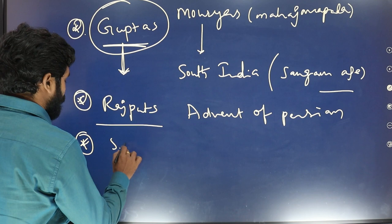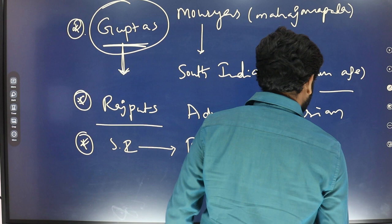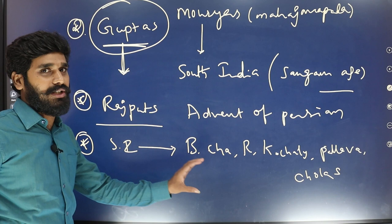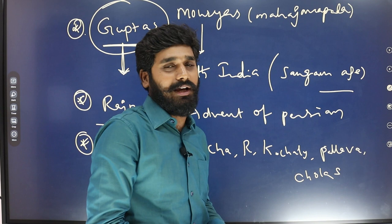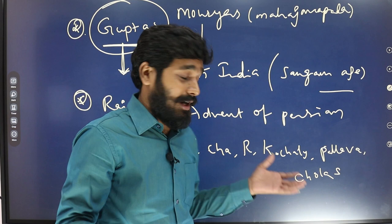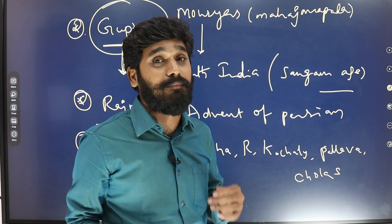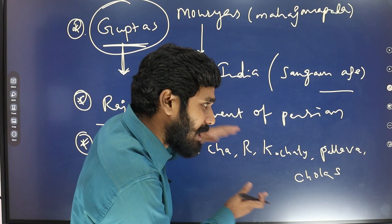After the Rajputs, we will discuss South Indian history — the Badami Chalukyas, Rashtrakutas, Kalyani Chalukyas, Pallavas, and Cholas. These are very important dynasties. Great architecture can be seen from the Badami Chalukya period to the Chola period, including the Brihadeeswara temple, Nasik caves, and Ellora caves. In the 16th cave at Ellora, the great Kailasanatha temple was constructed by Rashtrakuta ruler Krishna.